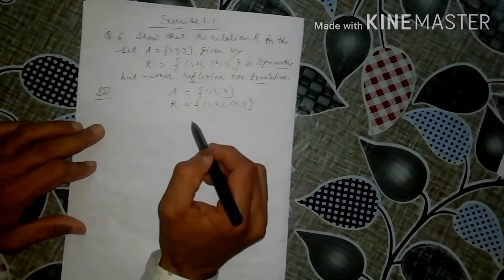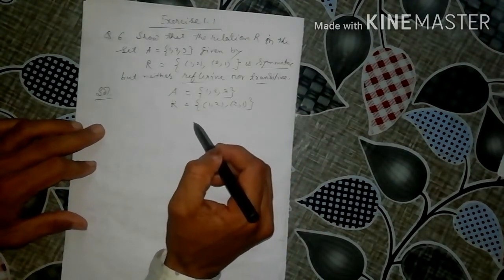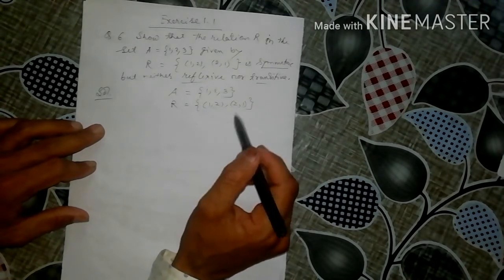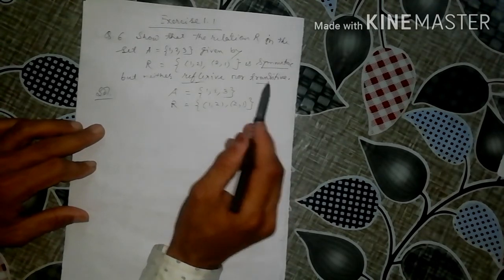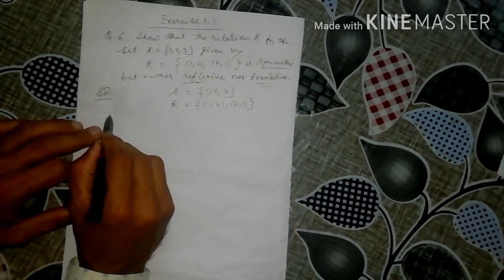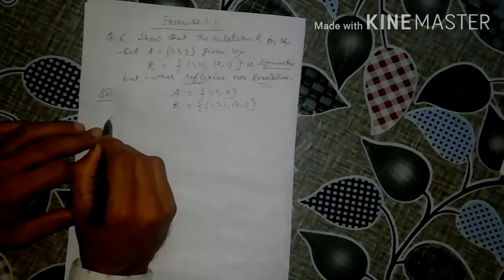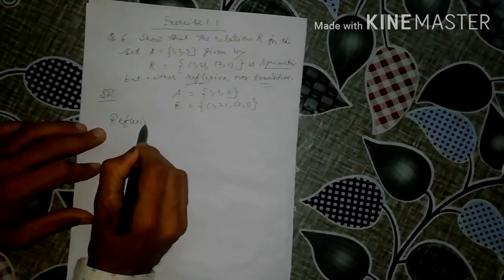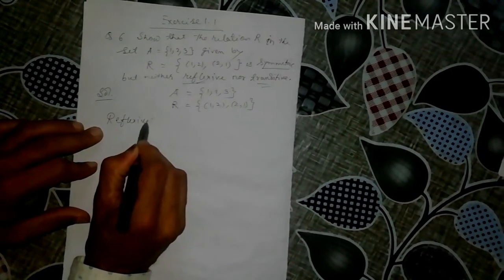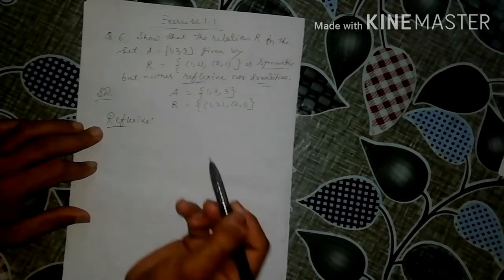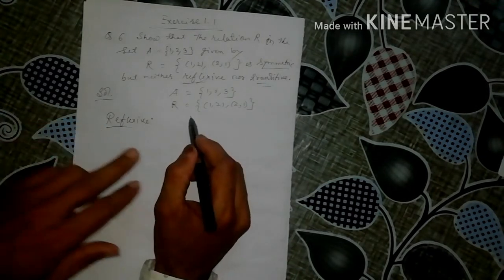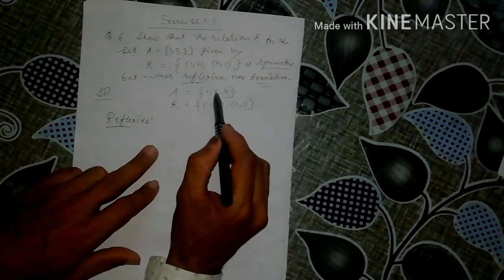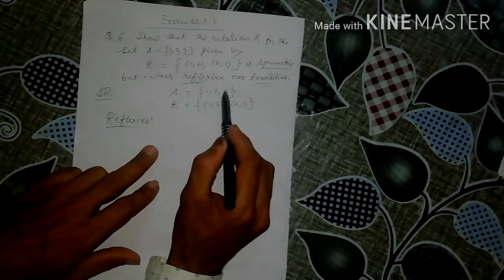What is symmetric? It is already supposed to be symmetric — it is symmetric, but neither reflexive nor transitive. Let me check reflexive. What is reflexive? For reflexivity, we check elements 1, 2, 3.